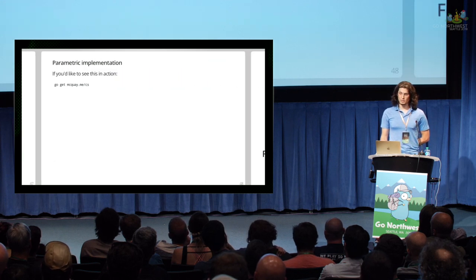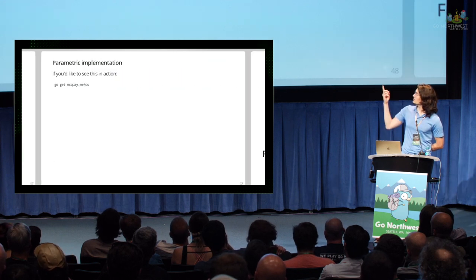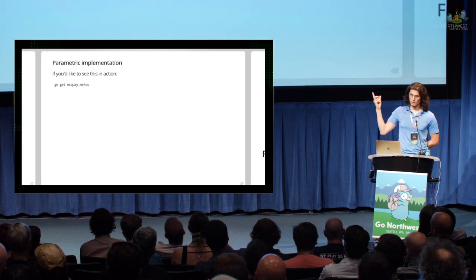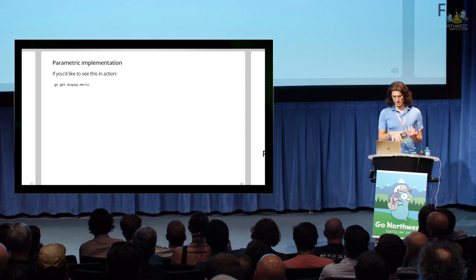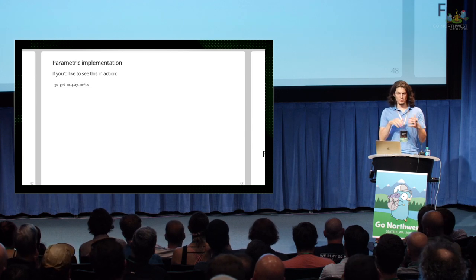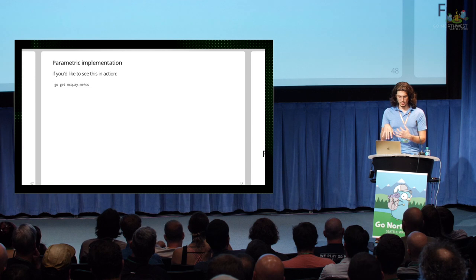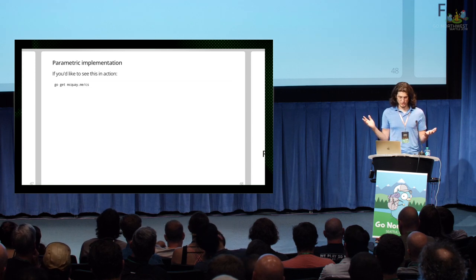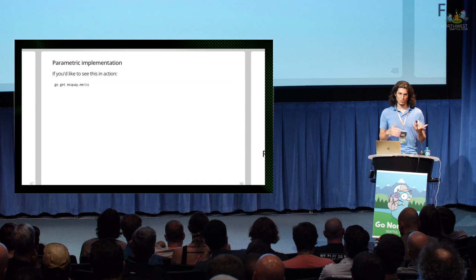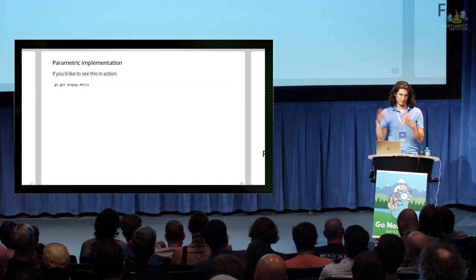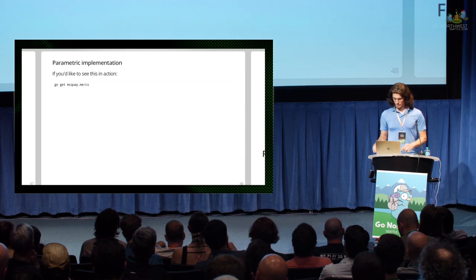If you'd like to see this in action, I made a small tool called CS. If you give it multiple files to checksum, it will do them all concurrently. It supports a wide range of hashing algorithms, and with the minus-C flag it will automatically detect what the checksum format is, so you can have a file with all sorts of entries and it will checksum them for you.